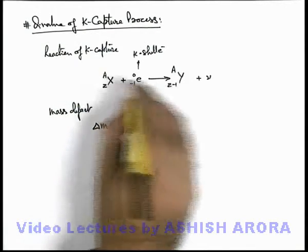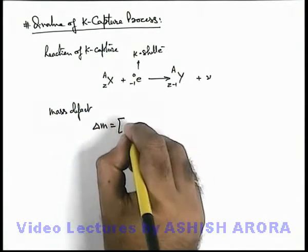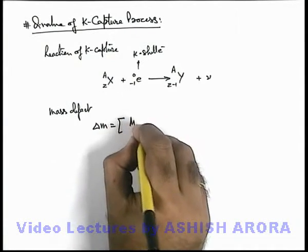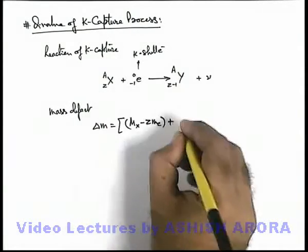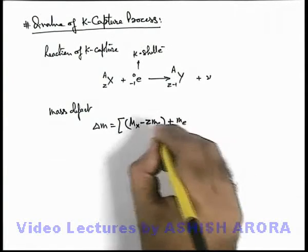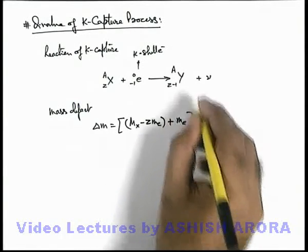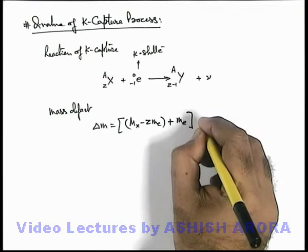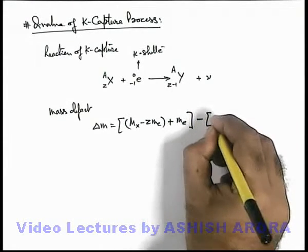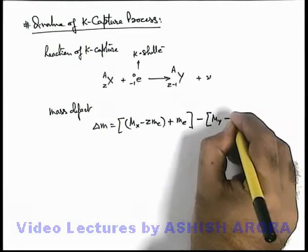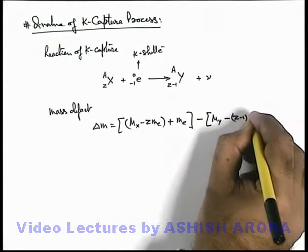Then delta M, we can write the reactant masses. For X we can write M_X minus Z times m_e, plus one electron mass is absorbed by the nucleus, and it produces the nucleus of element Y. So this will be minus the mass of nucleus Y, which will be M_Y minus (Z-1) times m_e.